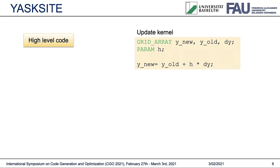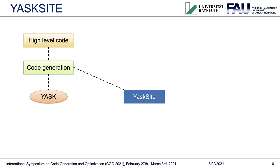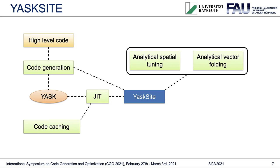The following slide shows the basic working principle of YASKSite. Input to YASKSite is a high-level code of the form shown on the right. YASKSite's code generation tool then processes this high-level code to a C++ stencil file that is compatible with YASK. This code is further compiled by YASK and linked to YASKSite. All this happens at runtime and is taken care of by the just-in-time compilation feature of YASKSite. Optionally, these builds can be cached to avoid compilation overhead when the same stencil is called a second time.